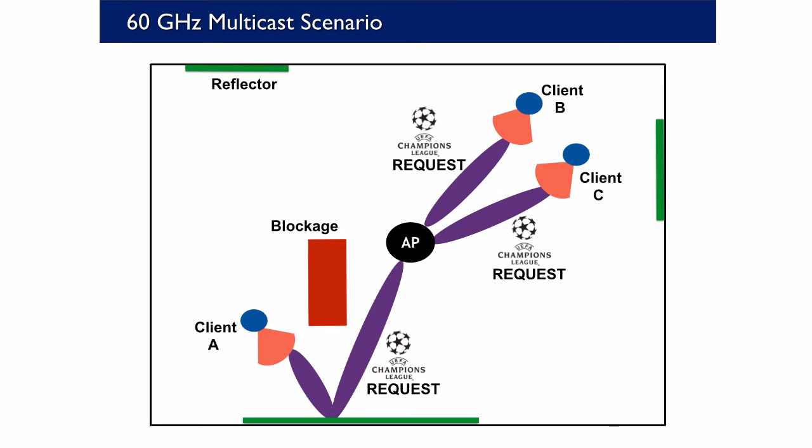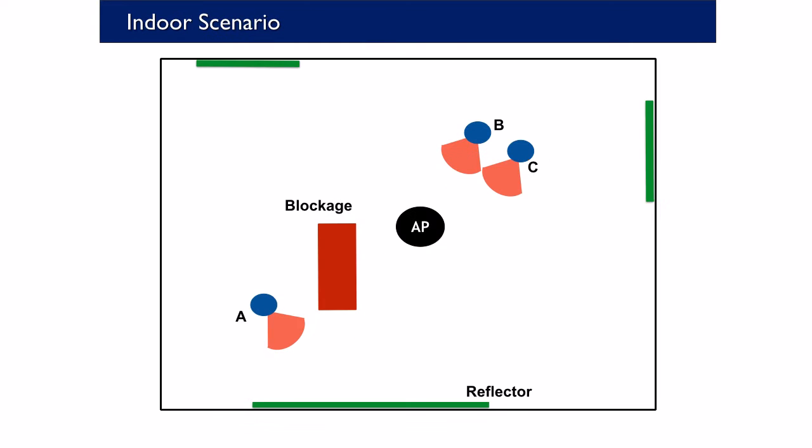A multicast service provides multiple clients with the same data from the AP. For this service, the AP partitions the multicast group into subsets and selects an appropriate beam and data rate for each subset.